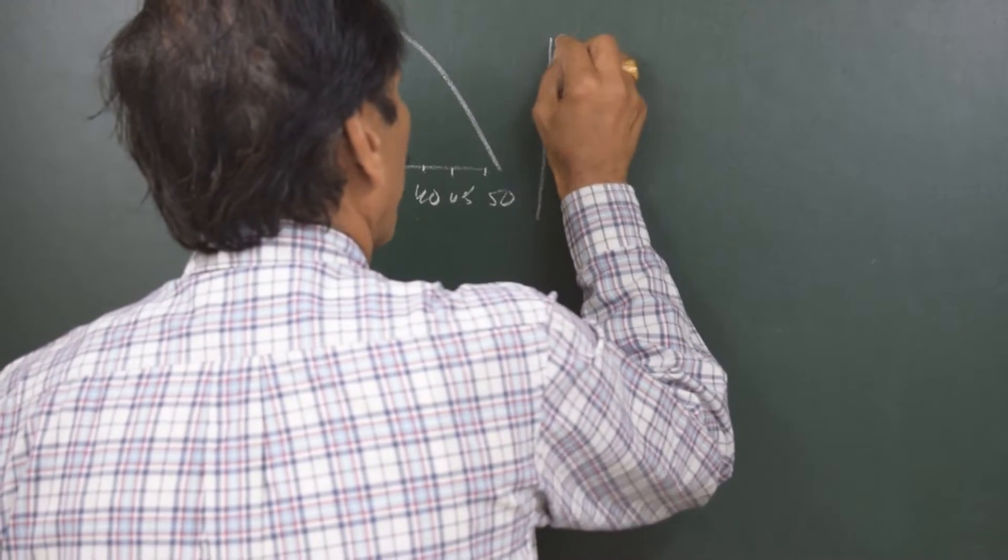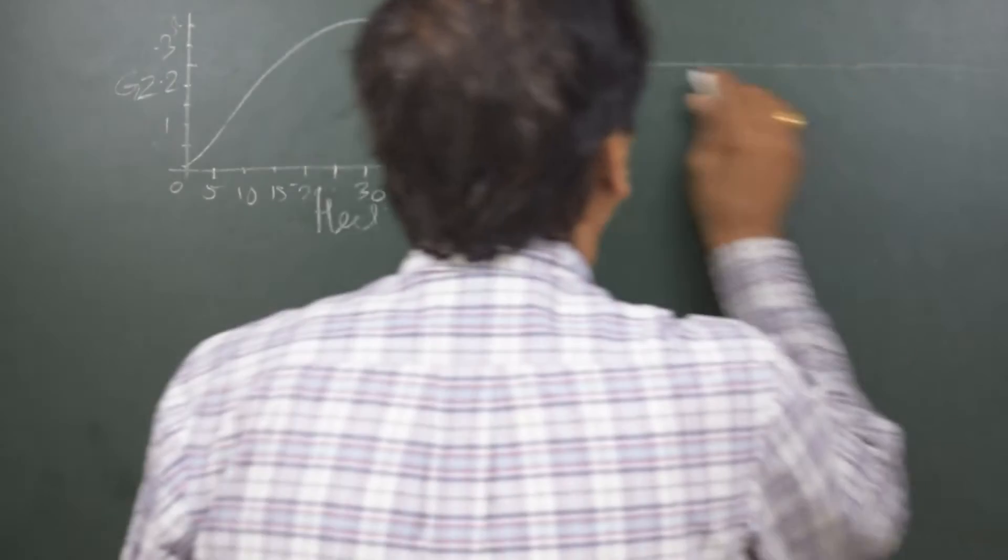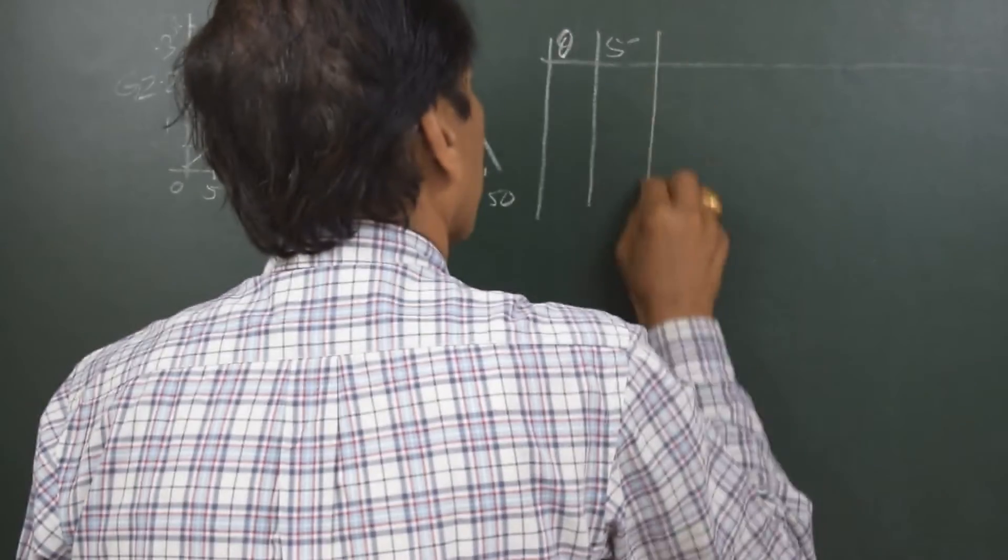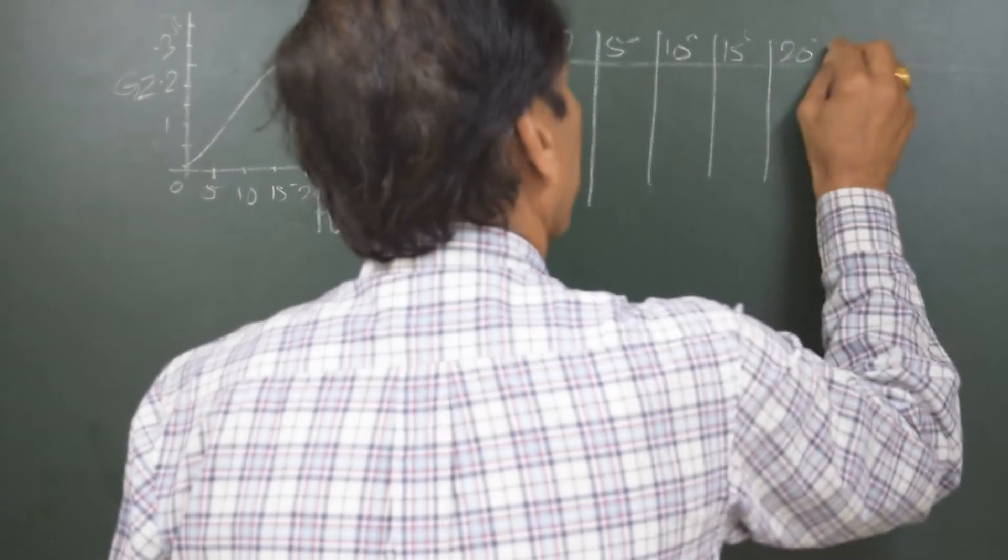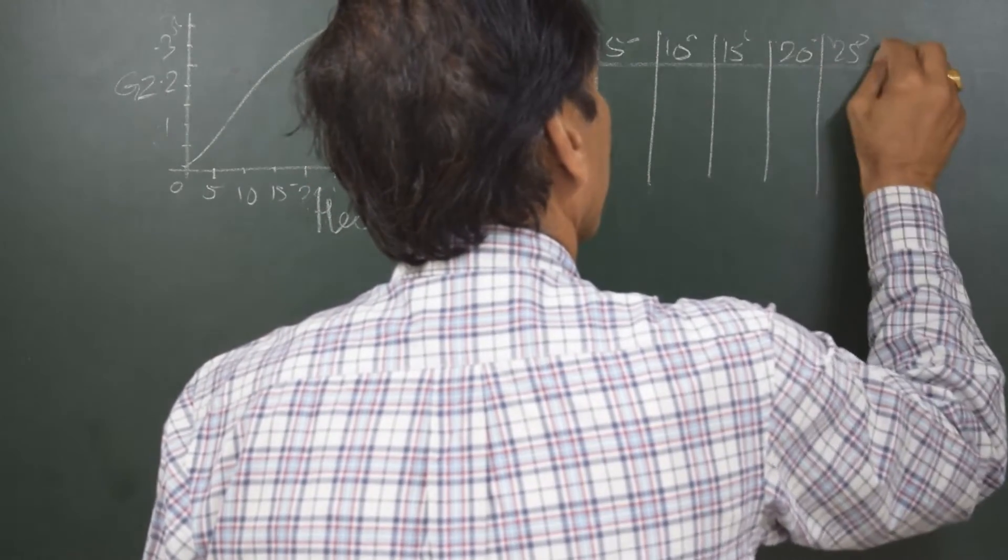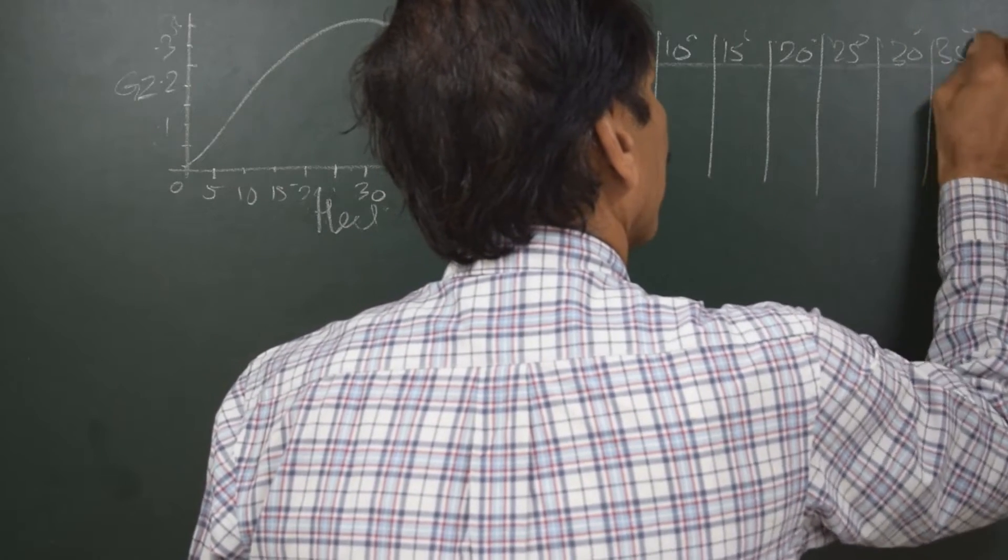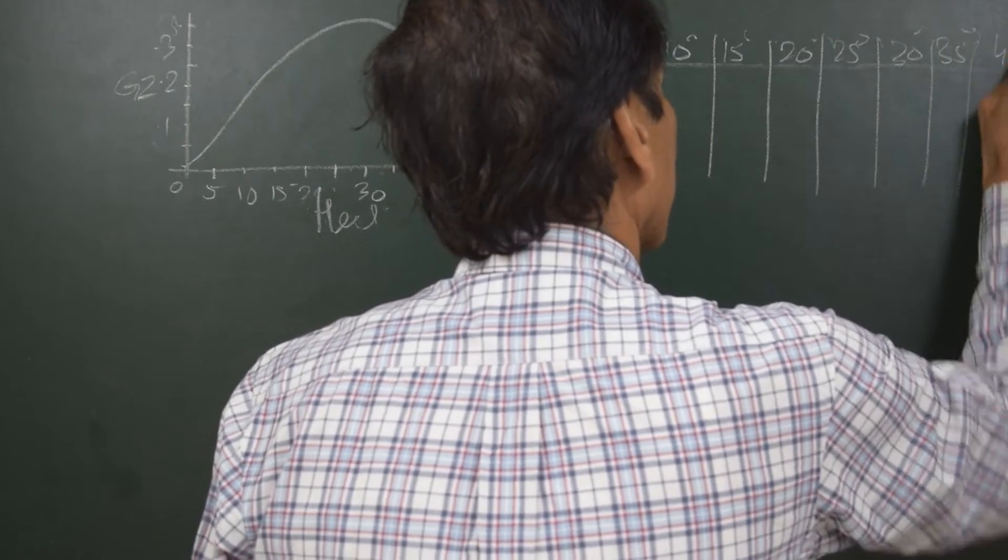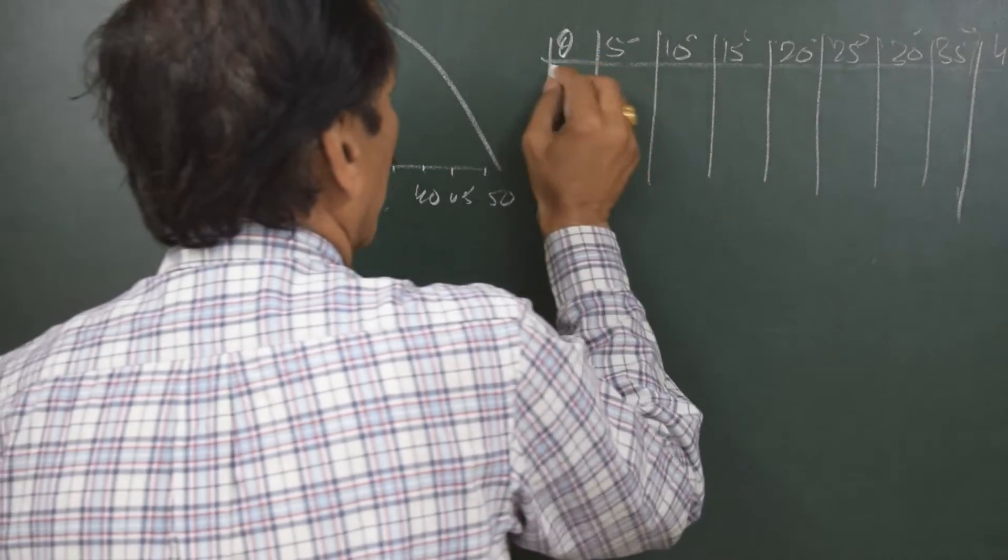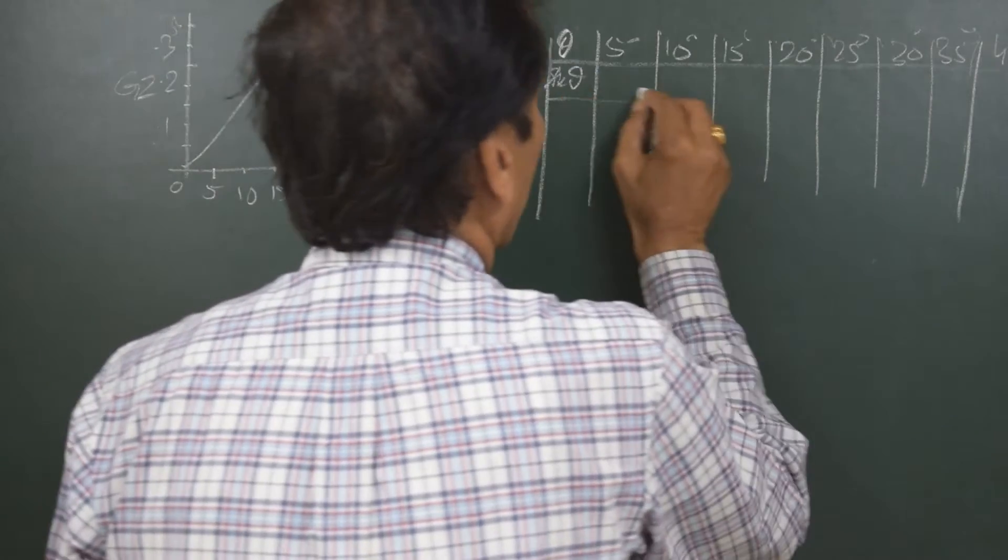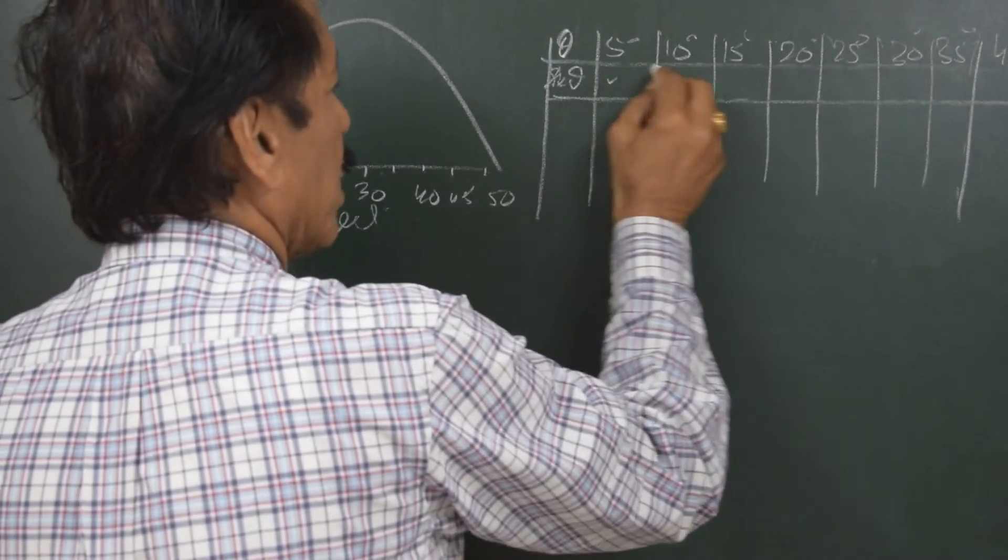So the first thing that would be written is theta. And theta means the various angles like 5 degrees, 10, 15, 20, 25, 30, 35 and 40 degrees. Sine theta. We need to write down the sine function of all these angles. Sine 5, sine 10, sine 15, sine 20.